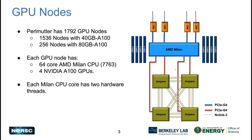Each GPU node also contains a host processor — a CPU which is the AMD Milan CPU. It contains 64 cores, and these are the hardware cores. Each core contains two logical CPUs or hyperthreads, giving you a total of 128 logical CPUs on the Perlmutter GPU nodes. Each GPU node contains four NVIDIA A100 GPUs, with 256 nodes having the 80 GB HBM variant.